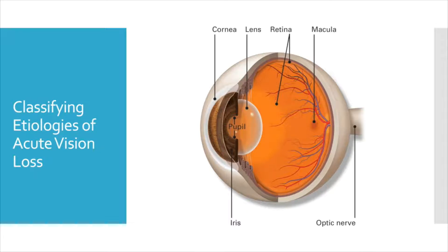Retinal processes include retinal detachments, acute macular processes, or retinal vascular issues. Acute onset neurologic processes that lead to acute vision loss include vascular occlusion, hemorrhagic strokes, trauma, structural compression, or optic nerve processes.